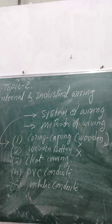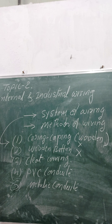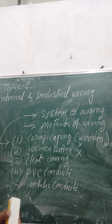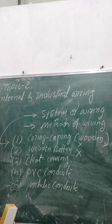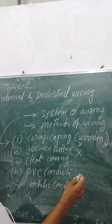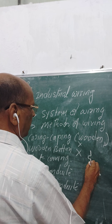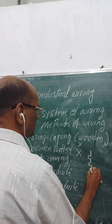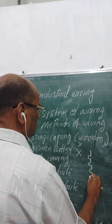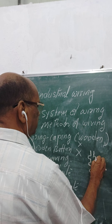The wooden casing-capping and batten systems are not in use nowadays because wood is not available for manufacturing, and the skilled manpower required for laying this wiring is also not available. Commonly, the wiring used nowadays is mostly PVC conduit wiring and metal conduit wiring. Cleat wiring is used for temporary applications.